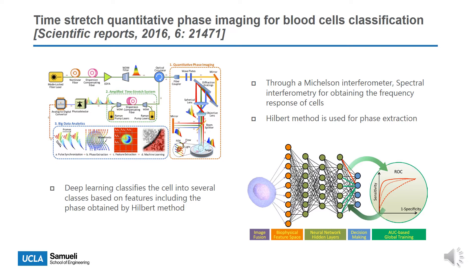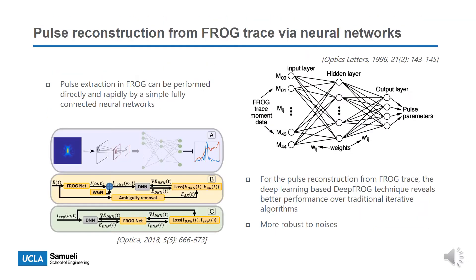Through a Michelson interferometer, spectral interferometry is used for obtaining the frequency response of cells, and the Hilbert transform is used for phase extraction. Then, deep learning classifies the cells into different classes with high accuracy based on features including the phase obtained by the Hilbert method. Moreover, deep learning is used to replace traditional iterative algorithms in ultra-short pulse reconstruction from FROG traces, and the deep learning-based technique is more robust to noise, showing better performance.